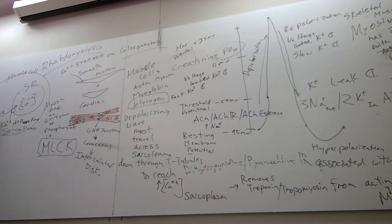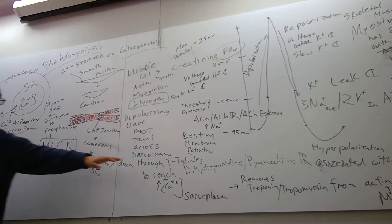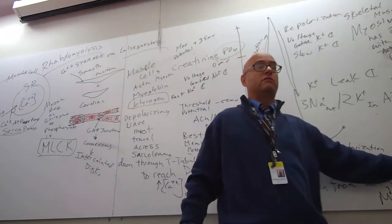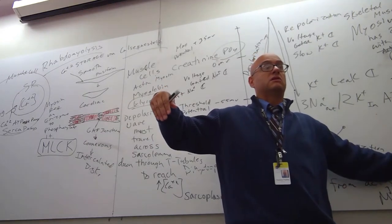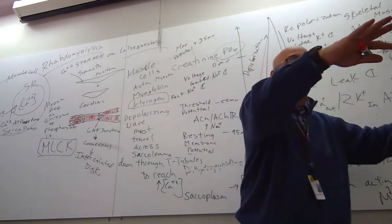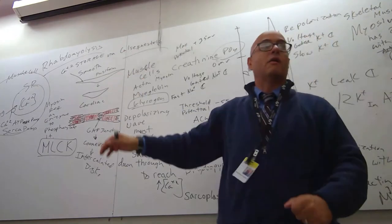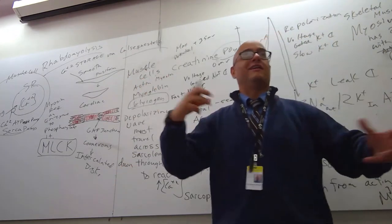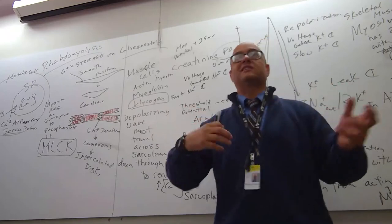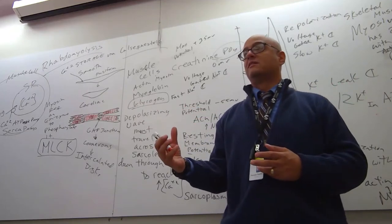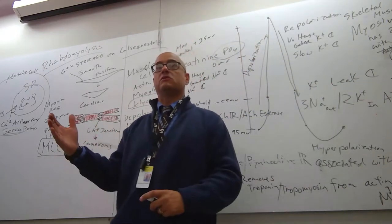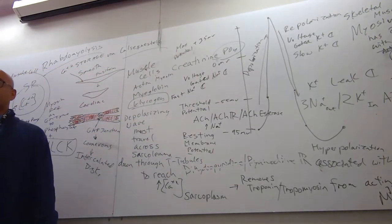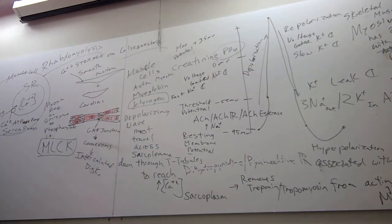It's a calcium pump that you'll find on the SR that will literally take whatever calcium got released by these receptors when that voltage-gated signal came down the T-tubules. Immediately, it's like, wait, calcium, get back here. So they're working against each other. Because we can't have the muscle in this contracted state with the release of calcium always. We have to remove it. And then if need be, we have to release it again.